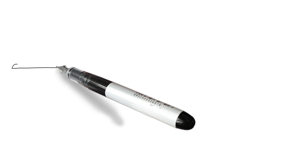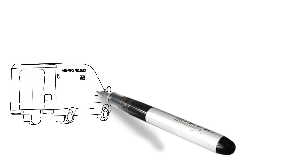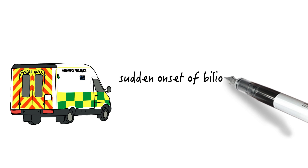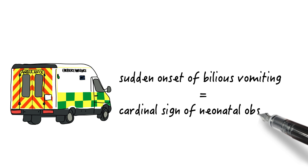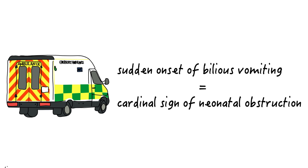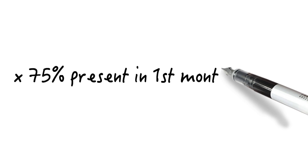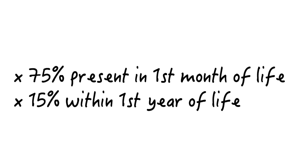Sunny arrives to the ER, and you open up the chart started from the hospital she was at before. It sounds like she is a previously healthy term newborn who had a sudden onset of bilious vomiting for the past 12 hours, which is the cardinal sign of neonatal intestinal obstruction. Malrotation with volvulus must be the presumed diagnosis until proven otherwise. Up to 75% of patients present during the first month of life, while another 15% will present within the first year.